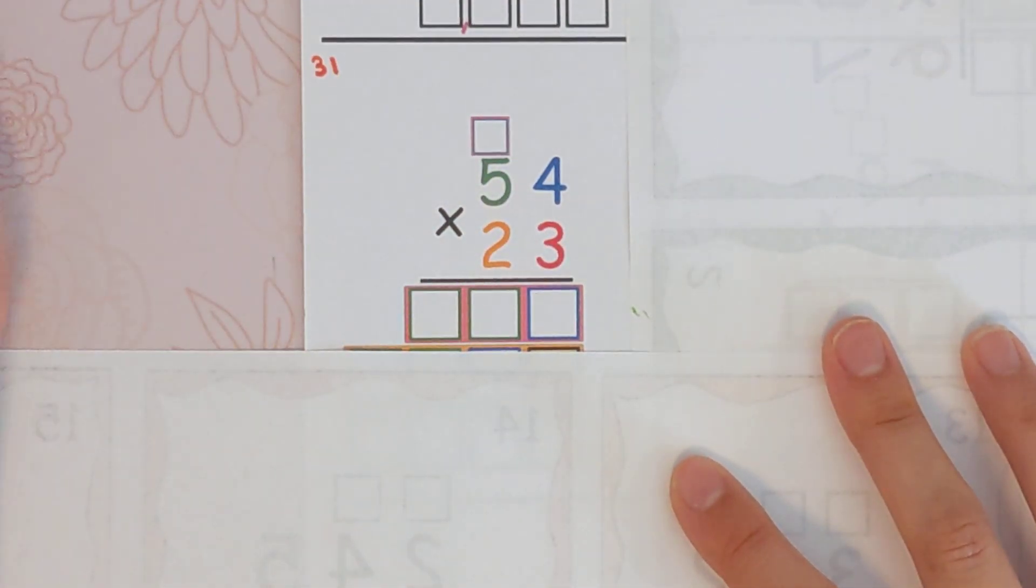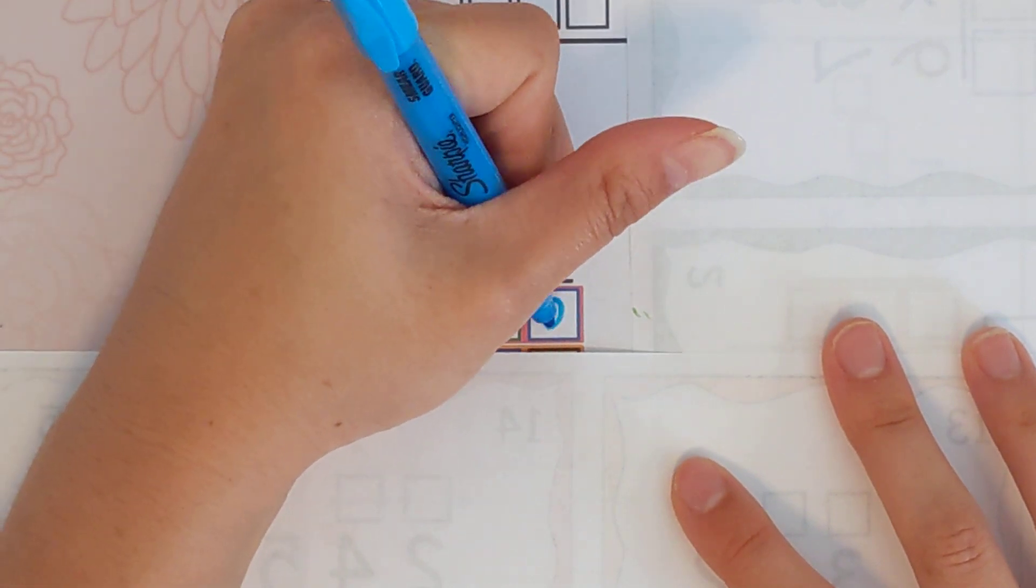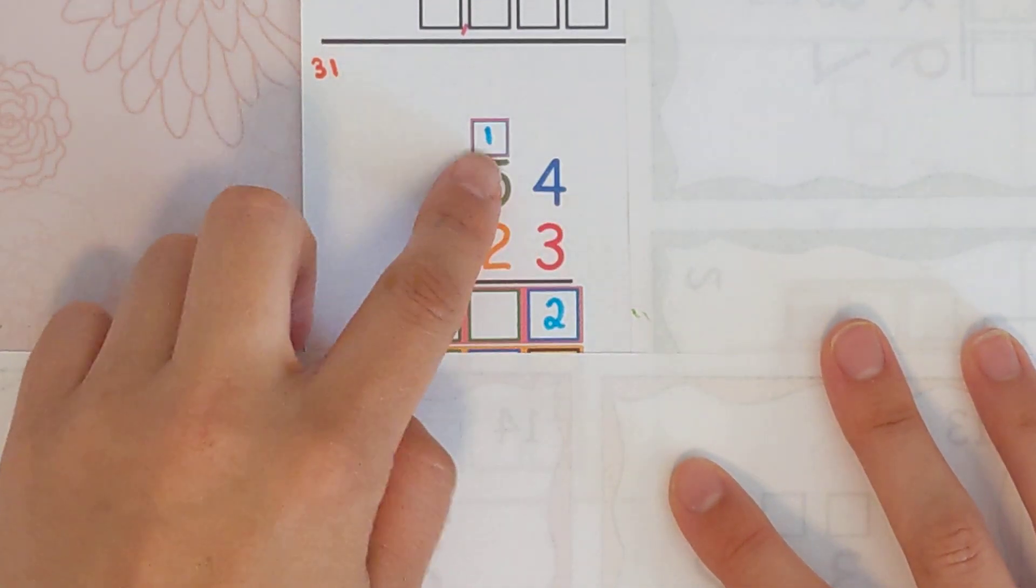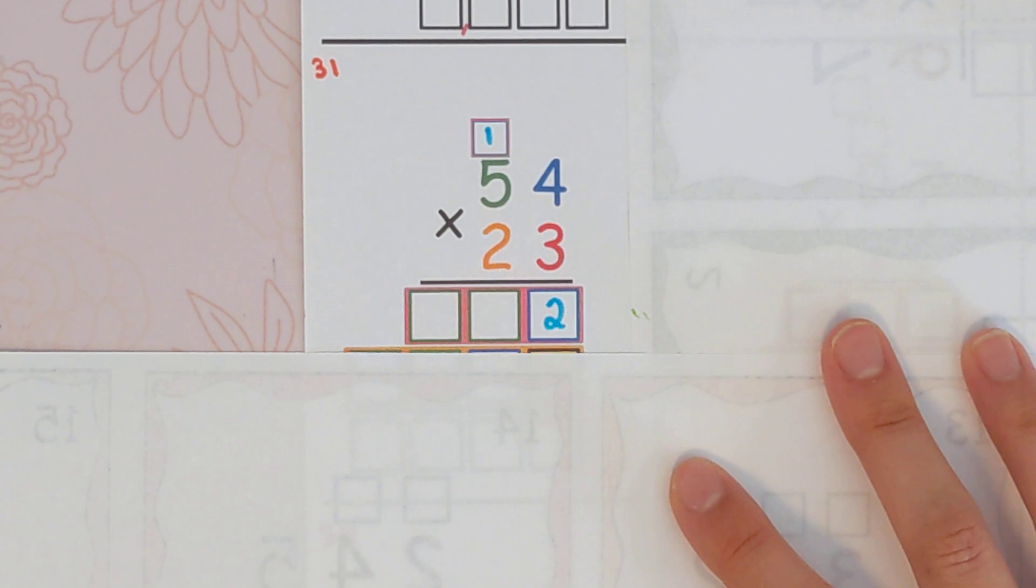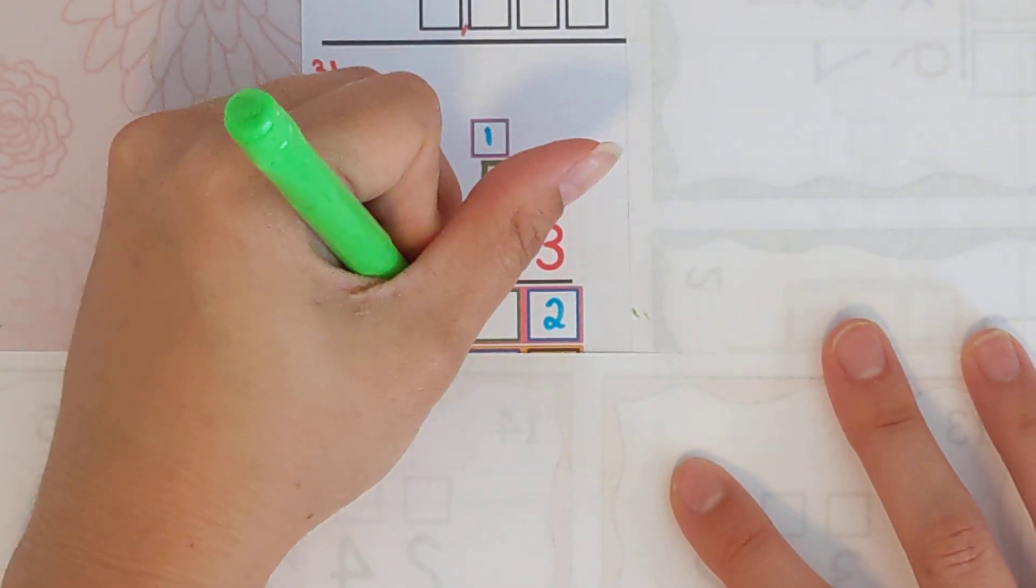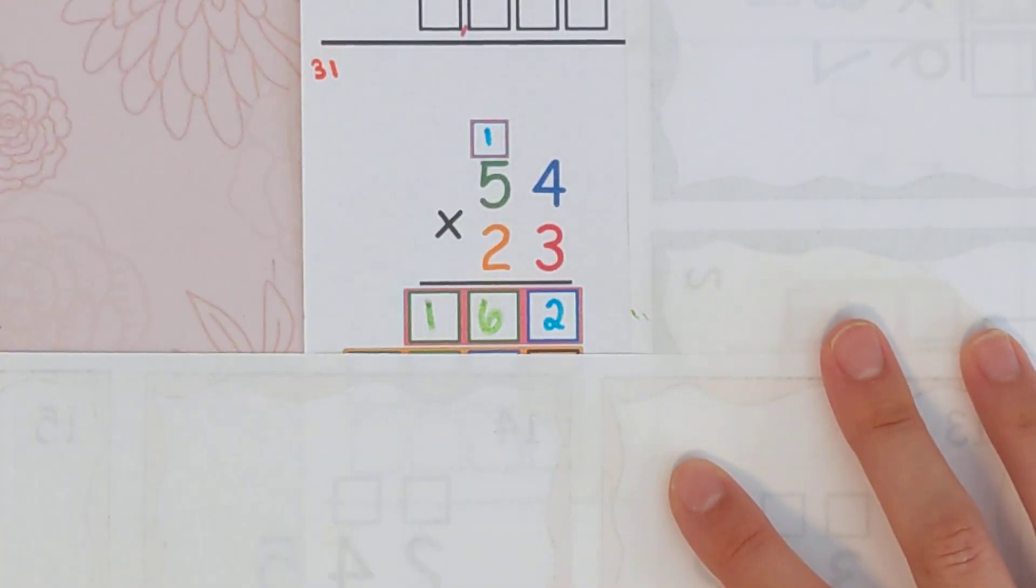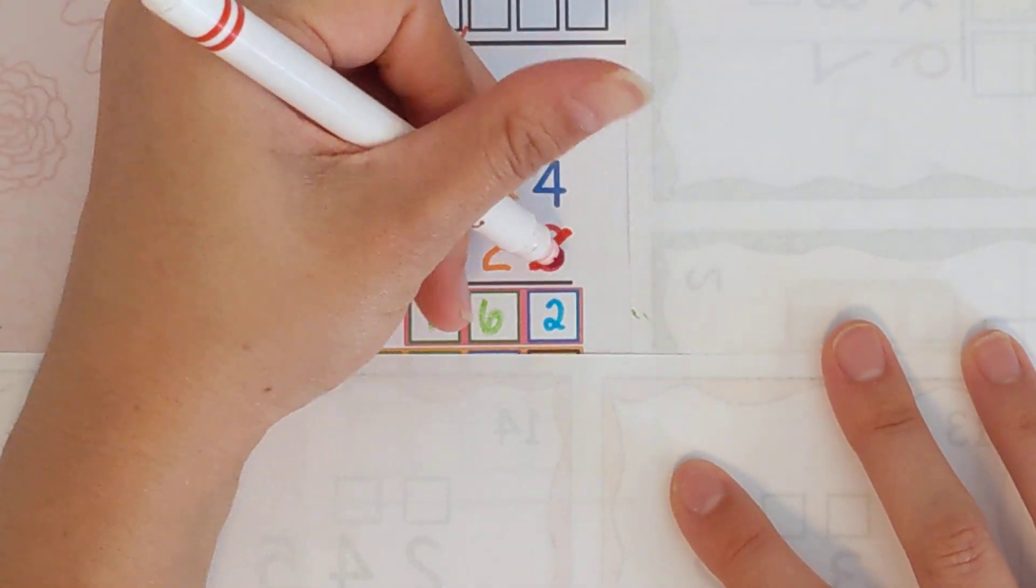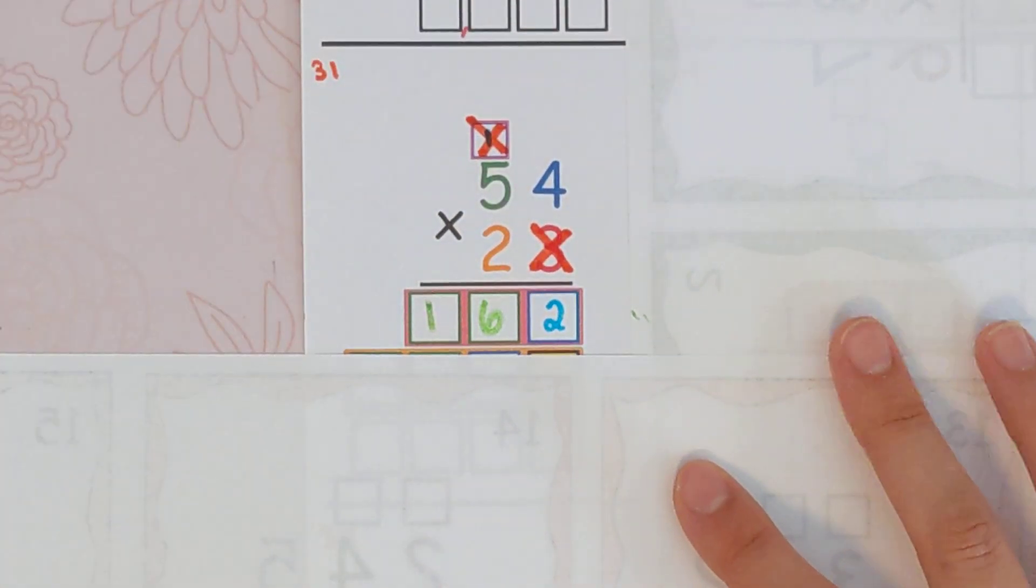So three times four is 12. Carry the one with the two. Three times five is 15 plus one is 16. You are finished with the three. Cross it off and come down a row.